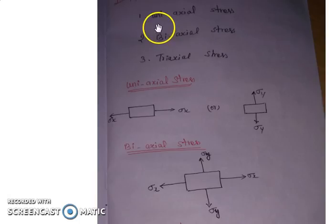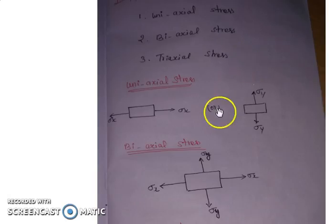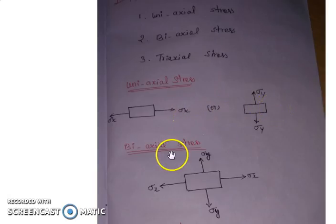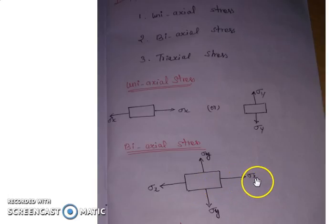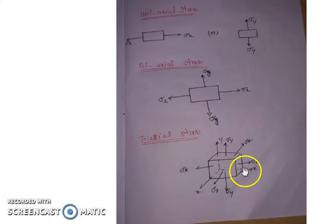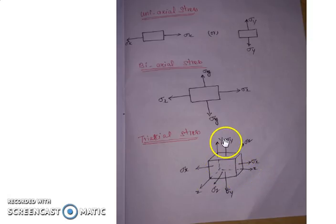We know uniaxial stress, biaxial stress, and triaxial stress. Uniaxial stress is the stress acting in only one direction, either x or y direction. Biaxial stress is the stress acting in two directions: x and y. Similarly, triaxial stress is the stress acting in three different directions: x, y, and z.